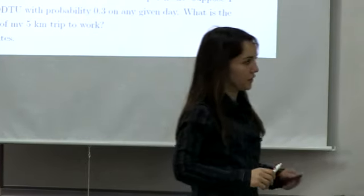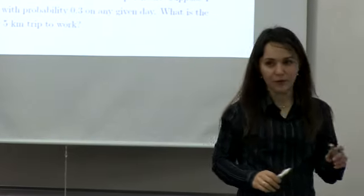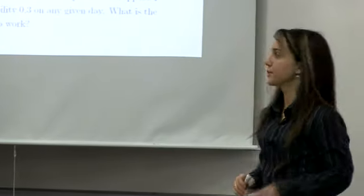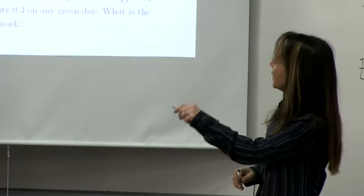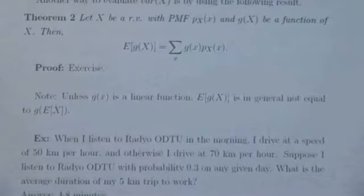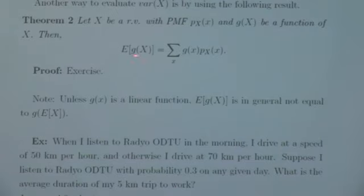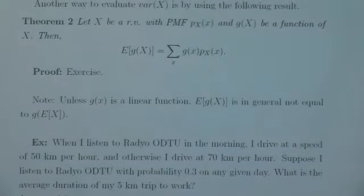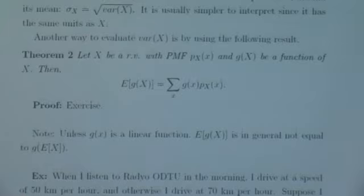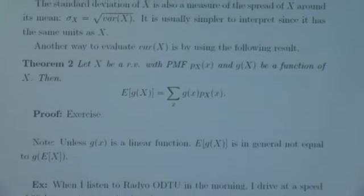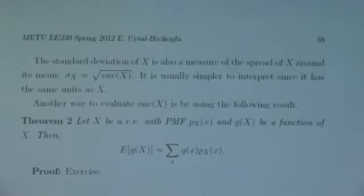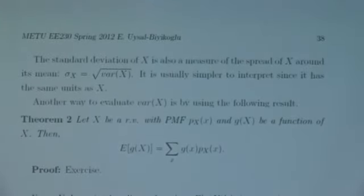The two purposes of the example were: number one, being able to compute the expectation of a function of a random variable; and number two, noticing that the expected value of a function is not necessarily equal to the function of the expectation.